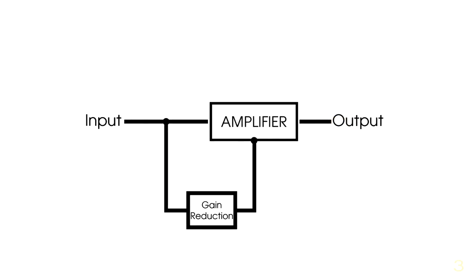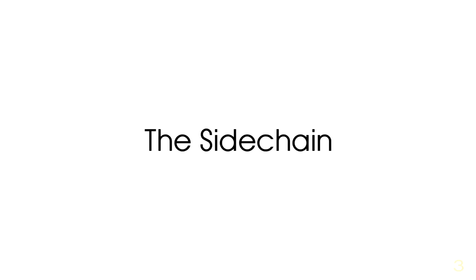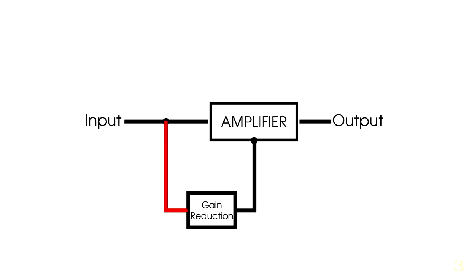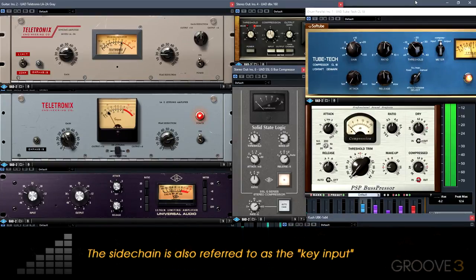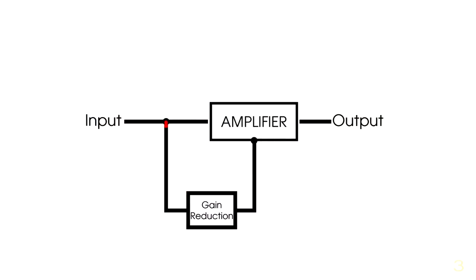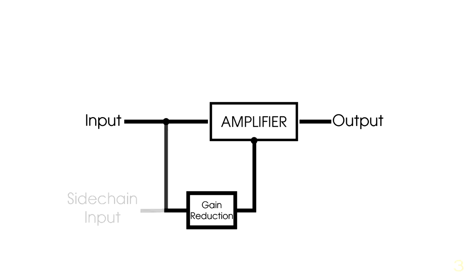In this video, we'll be taking a look at the sidechain input of the compressor. The sidechain is just a fancy term used to describe the input that feeds our gain reduction circuit, or the part that controls the volume of our linear gain amplifier. Every compressor has a sidechain, and up until now, we've been using our input signal to feed that sidechain to control the gain of our audio signal. Some compressors have the ability of separating their sidechain from the input signal, and others may have features inserted into the sidechain path to give the compressor extra control over the audio signal it's compressing.